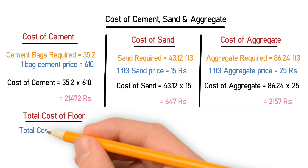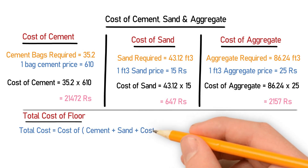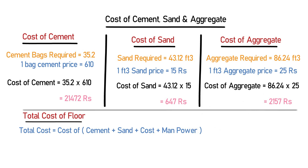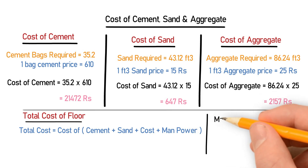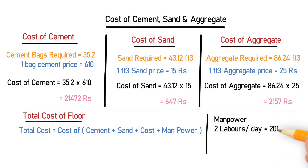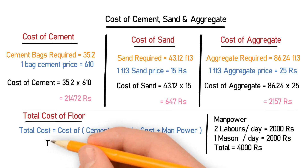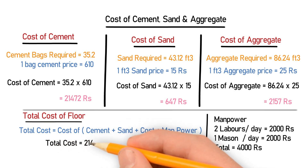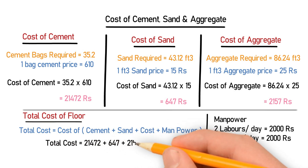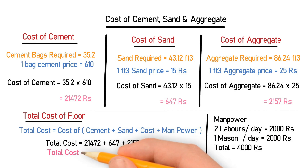The total cost of the floor equals the cost of cement plus the cost of sand plus the cost of aggregate plus manpower. Two laborers per day at 2,000 each plus one mason at 2,000 gives a manpower cost of 4,000. The total cost comes out to 28,276.